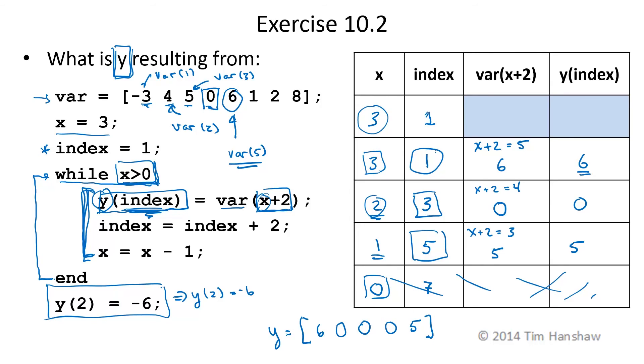Then after that, Y of 2 is set to be equal to negative 6. So when all is said and done, Y is equal to 6, negative 6, 0, 0, and 5. And that is our final value.